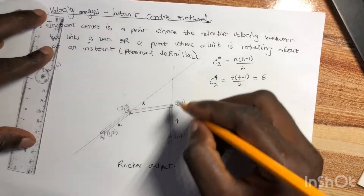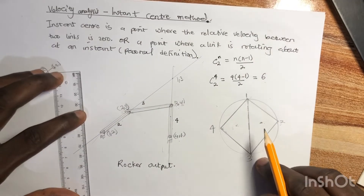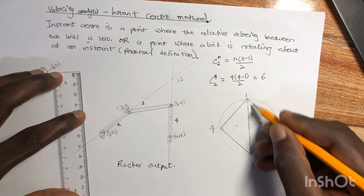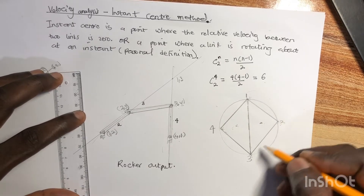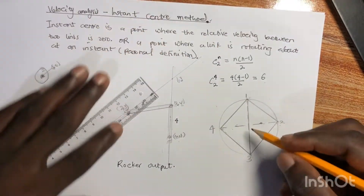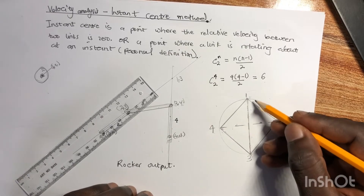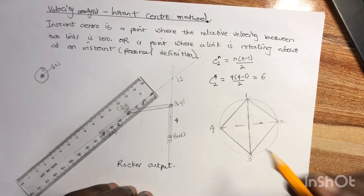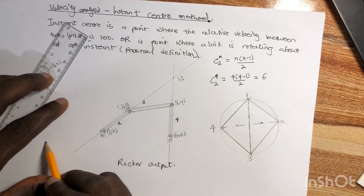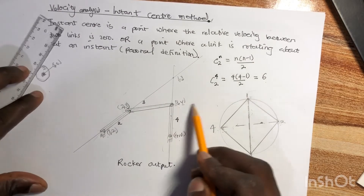The two lines meet at a point which we label as 1,3. Go back to the circle track and make that dashed connection a thick line — meaning instant center 1-3 has been found. Next, look for instant center 2-4. Link one is already connected to two, three, and four. For link two, it's connected to three but not to four, so we use short dashes for 2-4. Again, two triangles appear on either side.